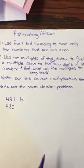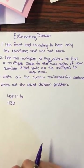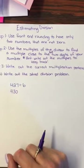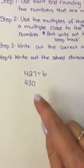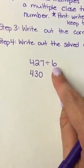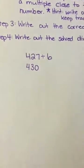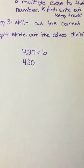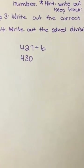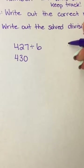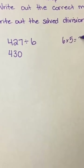Step 2: Use the multiples of the divisor to find a multiple close to the first two digits of your number. Write out the multiples to keep track. So I want to find what multiples of 6 come close to 43. I know quickly off the top of my head that 6 times 5 is equal to 30, so I'm going to start there.